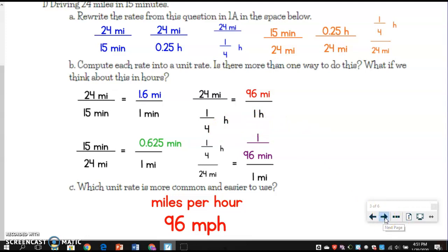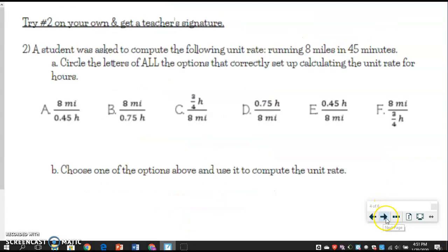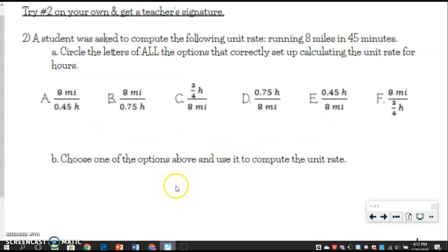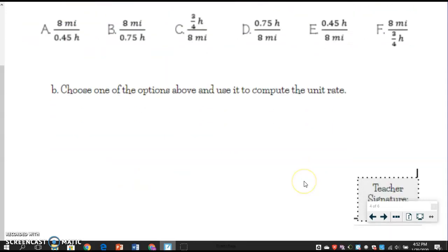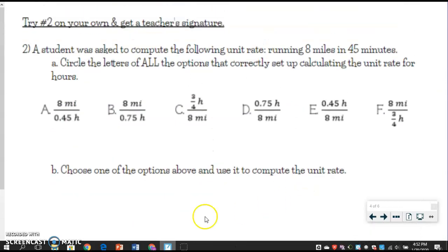So the next thing has a couple of things. I want you to try it on your own and get a teacher signature. So you're going to choose all the ones that apply. And then what you're going to do is just choose one. So whichever one makes most sense out of the ones you chose up here, I'm going to choose one of those rates and compute the unit rate. You're going to find the unit rate and then get a teacher signature, but make sure you don't accidentally do it for one that doesn't work. So pay attention to which ones would work for this scenario. Okay. Good luck. You can do it.